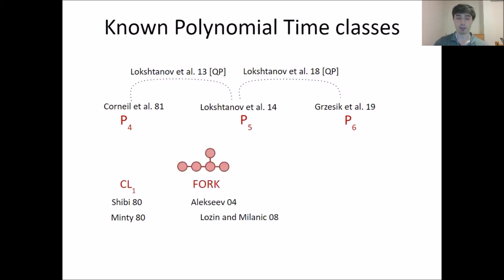Between these results, Lozin et al. gave a quasi-polynomial time algorithm for P6-free graphs in 2018, and also handled P5-free graphs in 2013. For CL1-free graphs — that is, regular claw-free graphs — Sbihi and Minty in 1980 gave a polynomial time algorithm. For fork-free graphs, LXA in 2004 gave a polynomial time algorithm, and in 2008 this was extended by Lozin and Milanič to the weighted version.